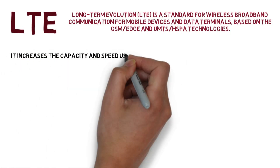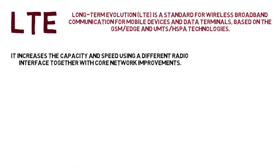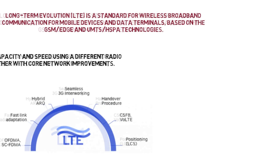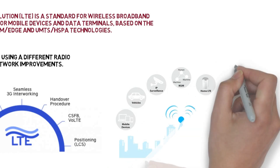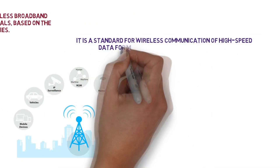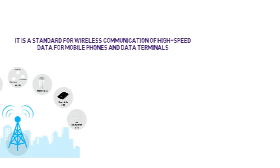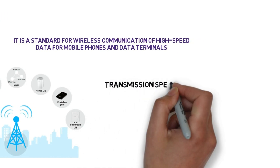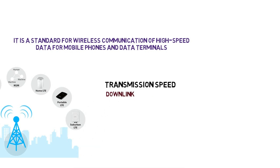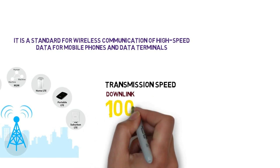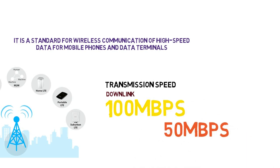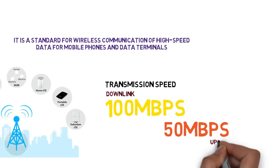The bandwidth is 1.4 to 20 MHz. LTE, which stands for Long-Term Evolution, is a standard for wireless broadband communication for mobile devices and data terminals. It increases capacity and speed using a different radio interface together with core improvements. Transmission speed is 100 MB per second for the downlink and 50 MB per second for the uplink.